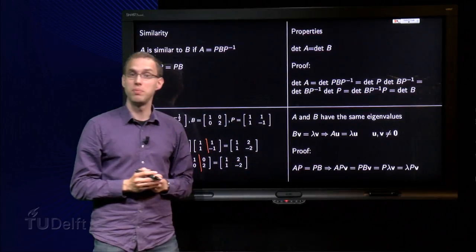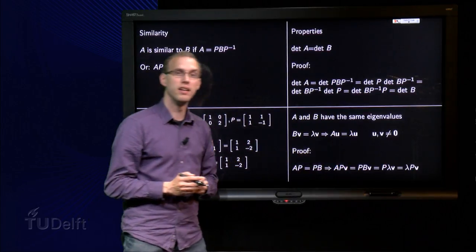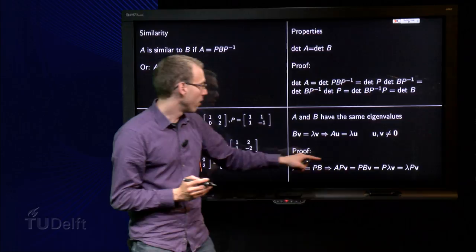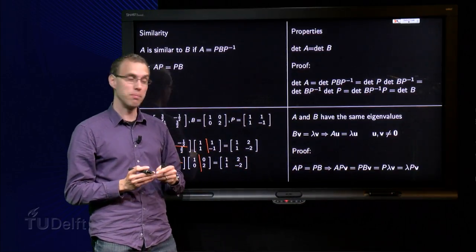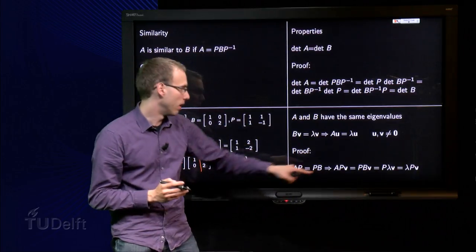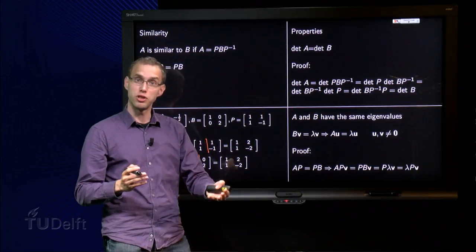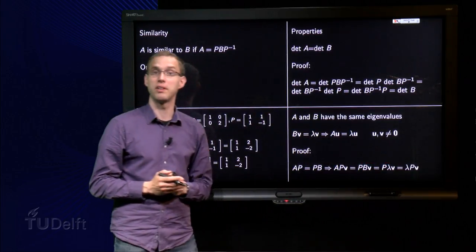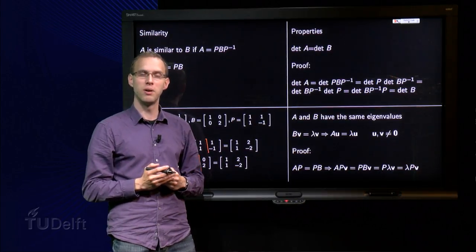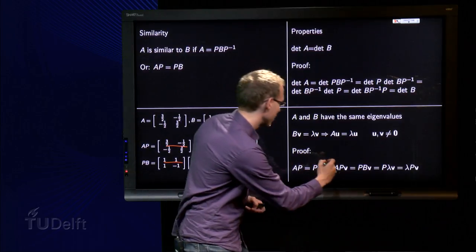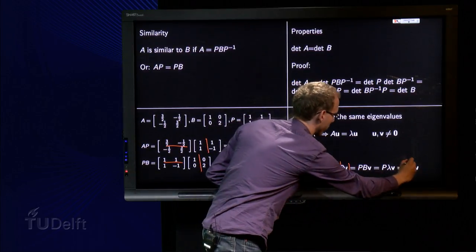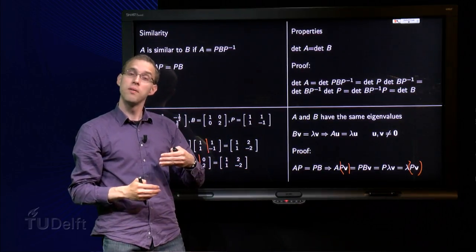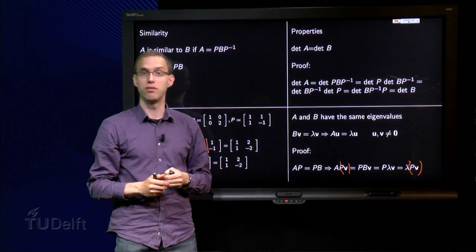Well, we know A times P equals P times B, put the V behind, then we get A times P times V equals P times B times V. We can write P times lambda times V, lambda is just a number, so we can take it to the front. And then we have A times P times V equals lambda times P times V. And that proves it. Well, why? Well, the trick is to put the brackets over here. And then you see A times PV equals lambda times PV, which means that lambda is also an eigenvalue of the matrix A.